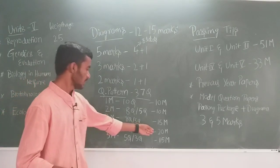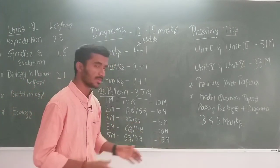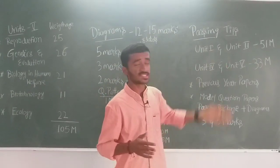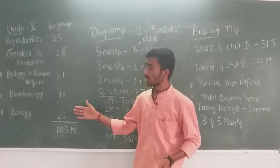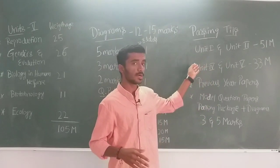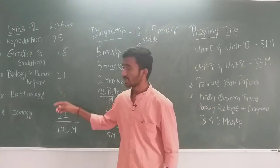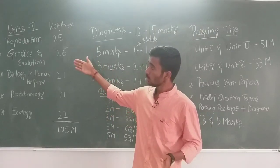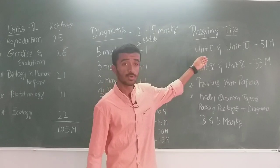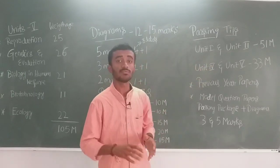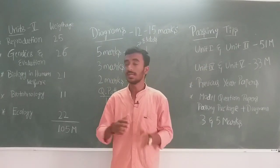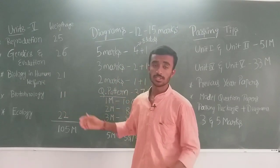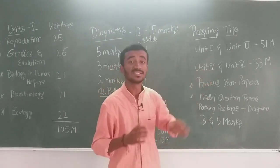If you divide part time — 20 marks and 5 marks and 15 marks. What is the passing strategy? You take the first 2 units out of 5 units total. The first 2 units — Reproduction and Genetics & Evolution — give you 51 marks, but they are tough. The last 2 units — 4th and 5th, Biotechnology and Ecology — give you 33 marks and are easier.